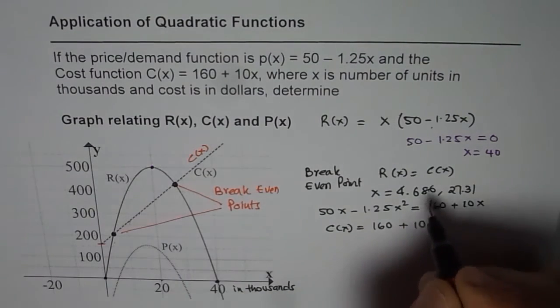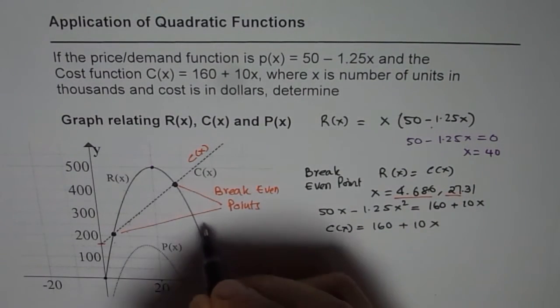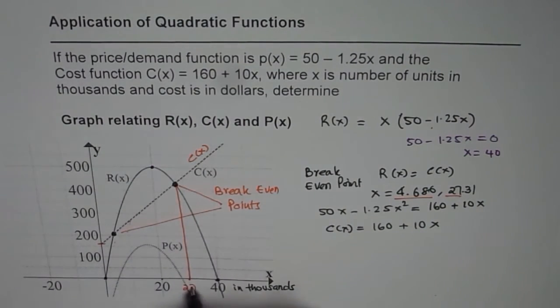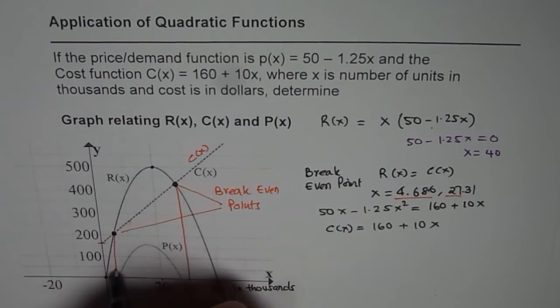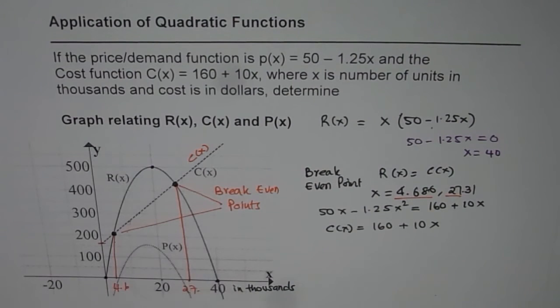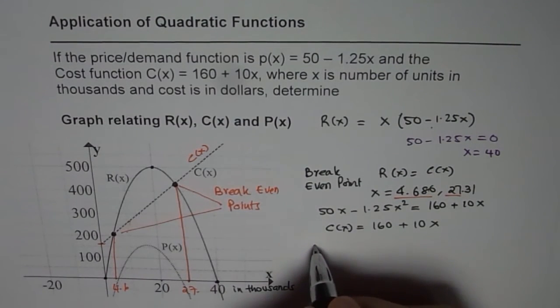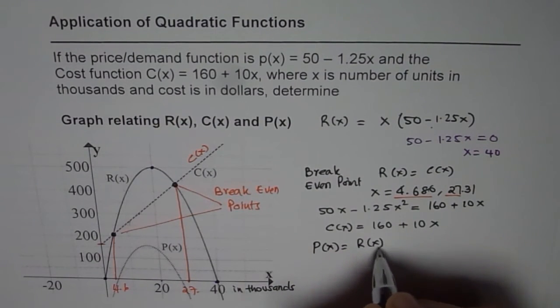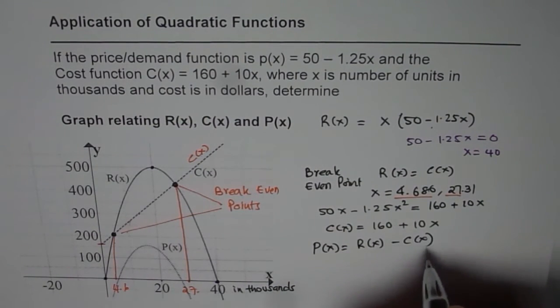What we calculated is this value is around 27 point something and this value is around 4.6 something. These are the points at which the revenue is same as the cost. Then we discussed about the profit function. Profit function is revenue take away cost function.